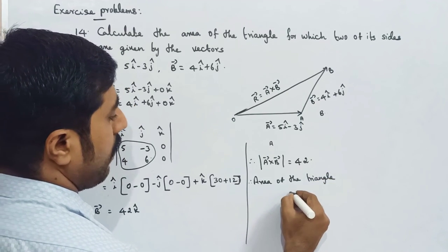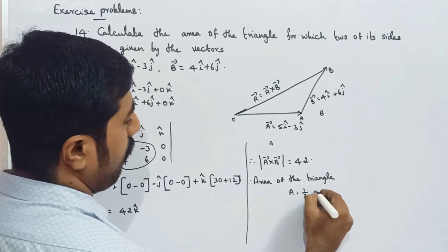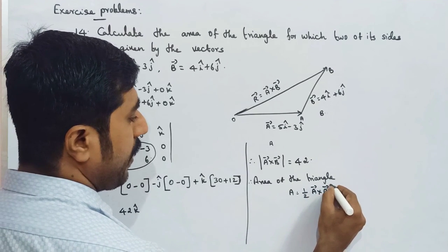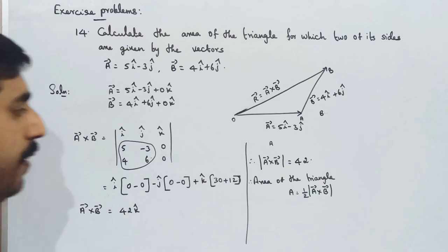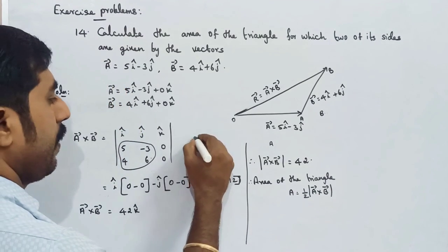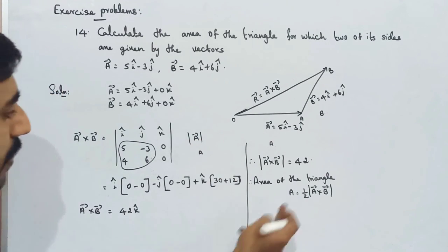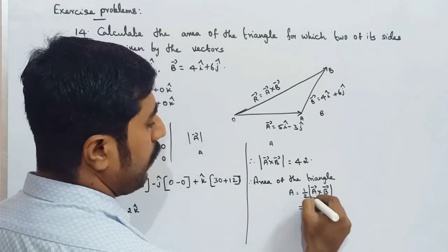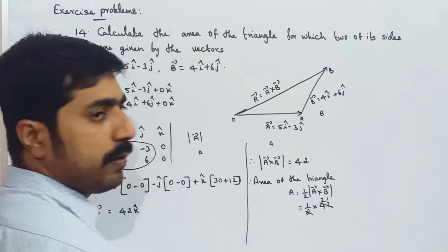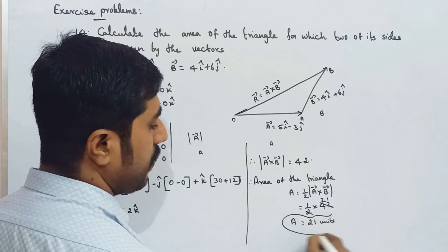Area of triangle equals half times the magnitude of A cross B, which is half into 42, equal to 21 square units.